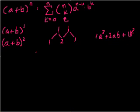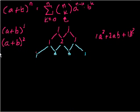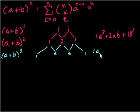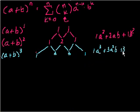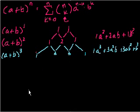So these are the coefficients of a plus b squared. And so 1 plus 2 is 3, 2 plus 1 is 3. Bring down the 1 on each side. And now we have the coefficients for a plus b to the third: 1a cubed plus 3a squared b plus 3ab squared plus 1b cubed. So that was pretty fast, and we could keep going down the Pascal's triangle.